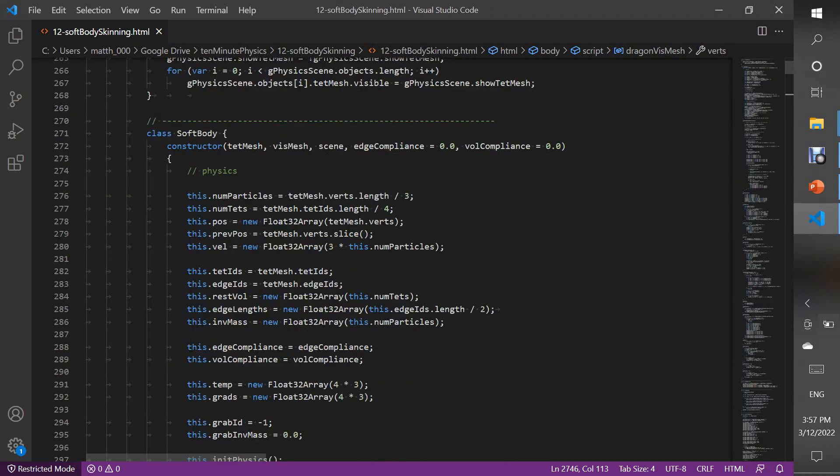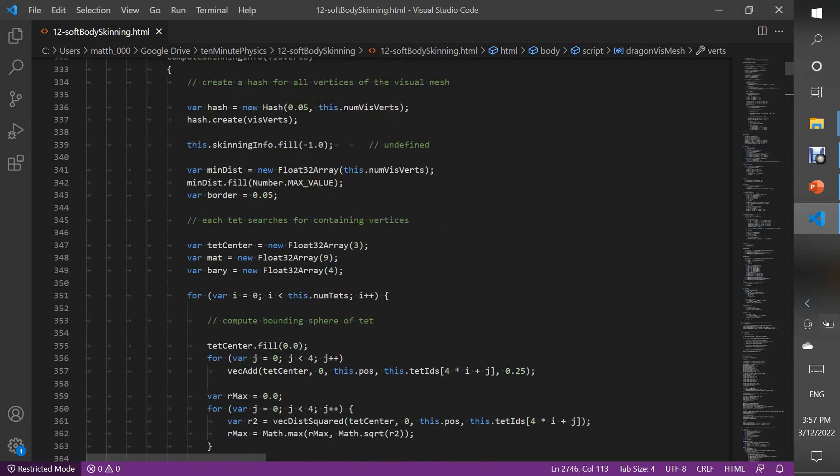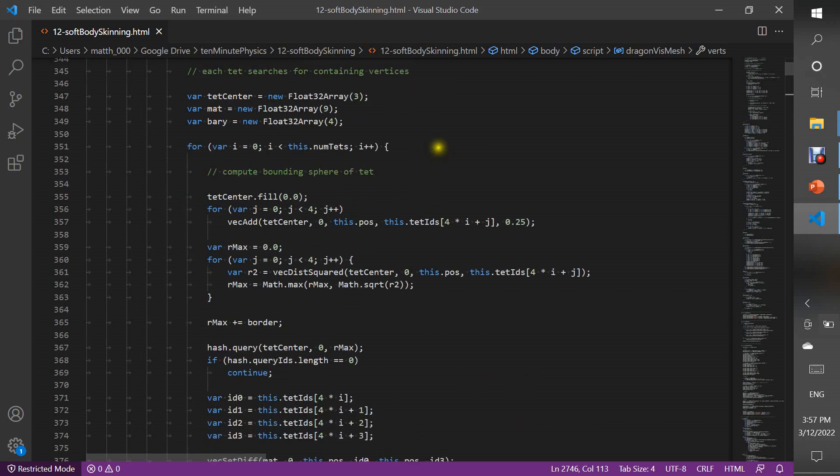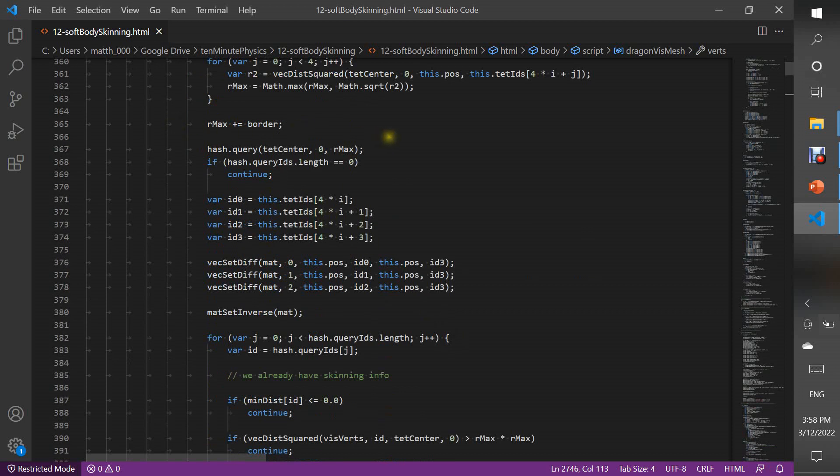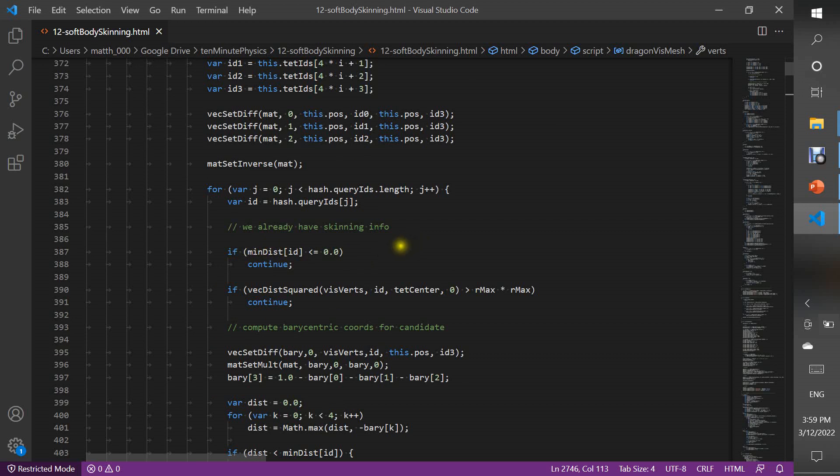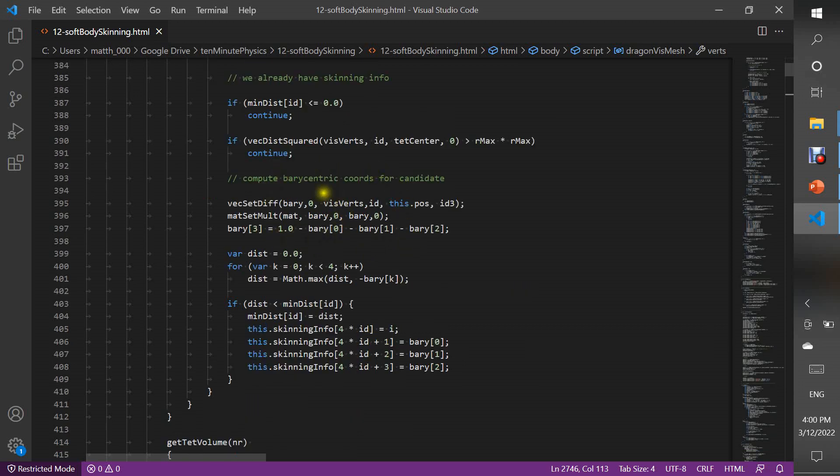I compute the barycentric coordinates of all vertices in a method of the class softbody. Here I first create a hash for all the visual vertices. Then, I define the mindist array and fill it with number dot maximum value. Next, I run through all the tetrahedra. Instead of computing a bounding box, as mentioned in the slides, I actually compute a bounding sphere. I use it to query the hash. Before iterating through all the vertices returned by the hash, I compute the inverse of the matrix P. If the mindistance of the current vertex is smaller or equal to zero, we know that we already found the surrounding tetrahedron. Otherwise, we compute the barycentric coordinates and the new distance. If the new distance is smaller than the mindistance, we update the mindistance and override the skinning information.